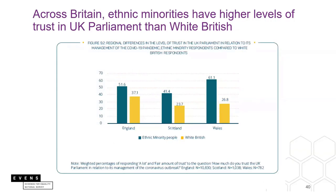Interestingly, across Britain, ethnic minorities have higher levels of trust in UK Parliament than the white British. Ethnic minority people are shown in the green bars and white British in the yellow bars, with the proportion expressing a great deal or a fair amount of trust in UK Parliament in relation to the management of the coronavirus pandemic. In all constituent countries of Britain, minorities show a higher proportion trusting the UK Parliament's management of the pandemic, which is particularly evident in Wales.